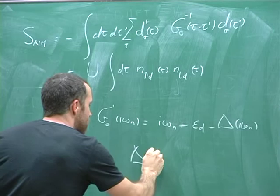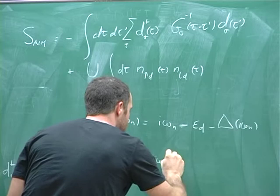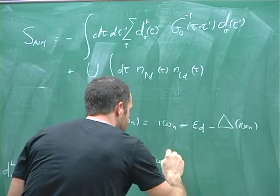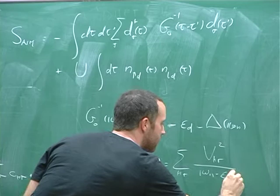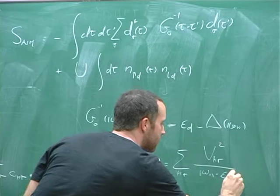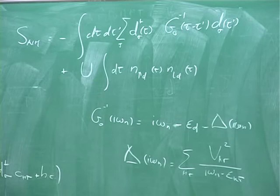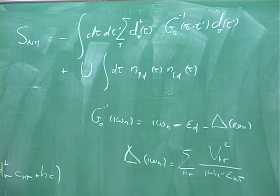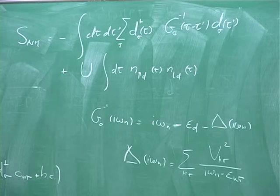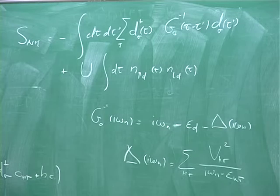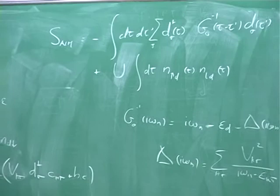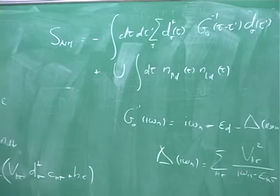As Antoine showed, the knowledge of G0 is essentially the same as having knowledge of ε_d, V_k, and ε_k — these two formulations are equivalent. The DMFT self-consistency will provide G0, but keep in mind this is actually the same as setting the parameters ε_d, V_k, and ε_k.